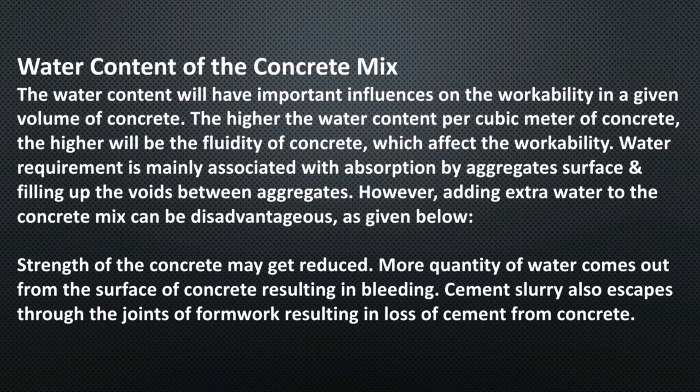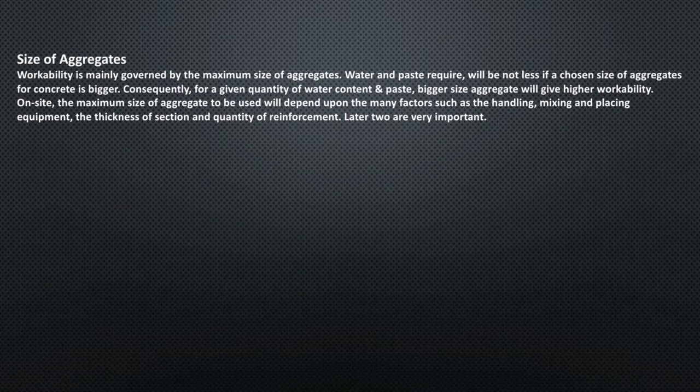Excess water causes more quantity of water to come out from the surface of concrete, resulting in bleeding. Cement slurry also escapes through the joints of formwork, resulting in loss of cement from concrete. Factor number two is size of aggregates. Workability is mainly governed by the maximum size of aggregates. For a given quantity of water content and paste, bigger size aggregate will give higher workability. The maximum size of aggregate depends on factors such as handling, mixing and placing equipment, the thickness of section, and quantity of reinforcement.